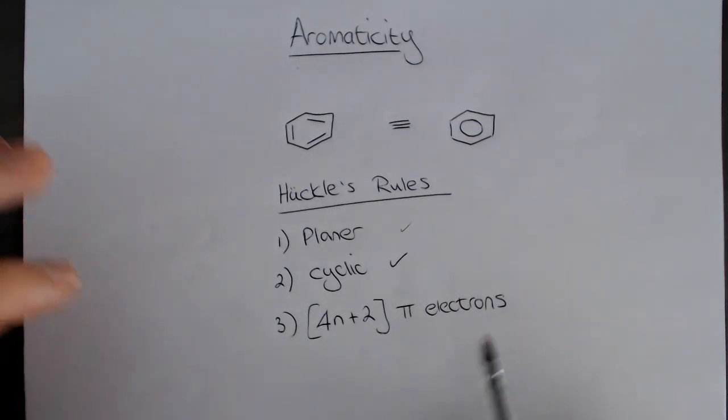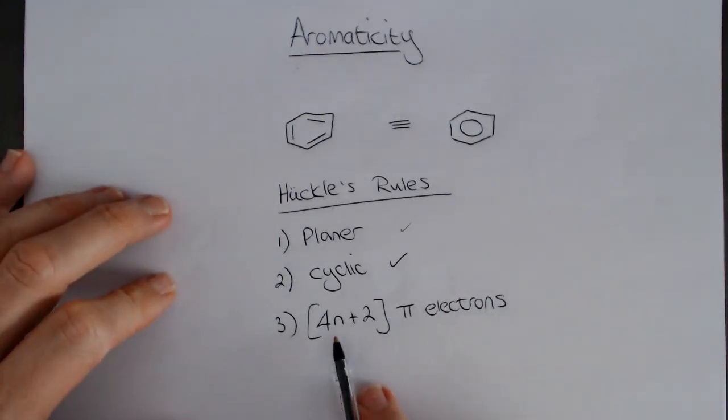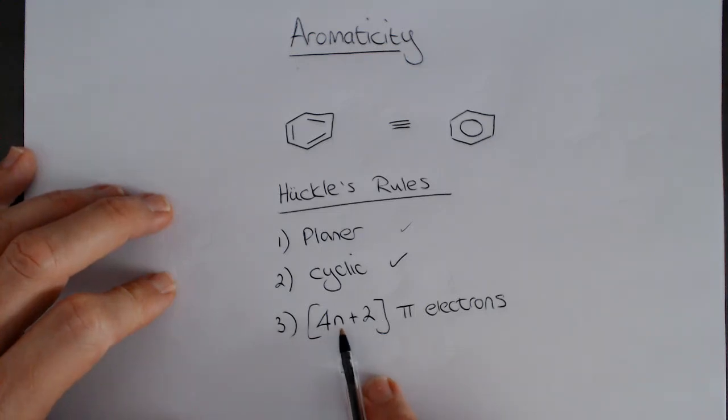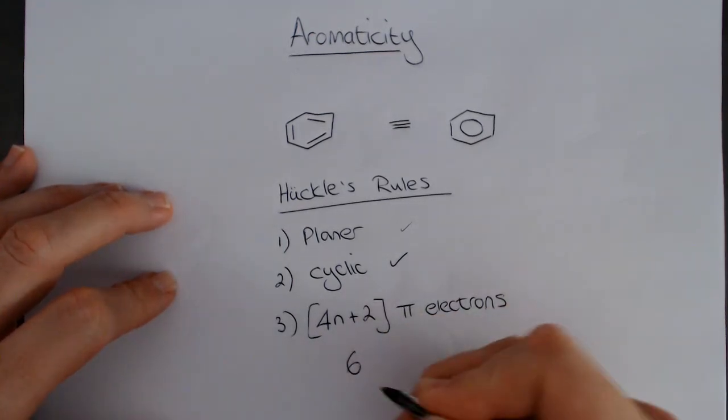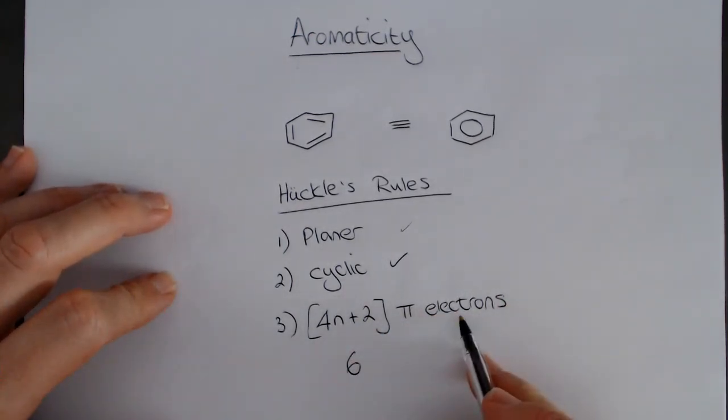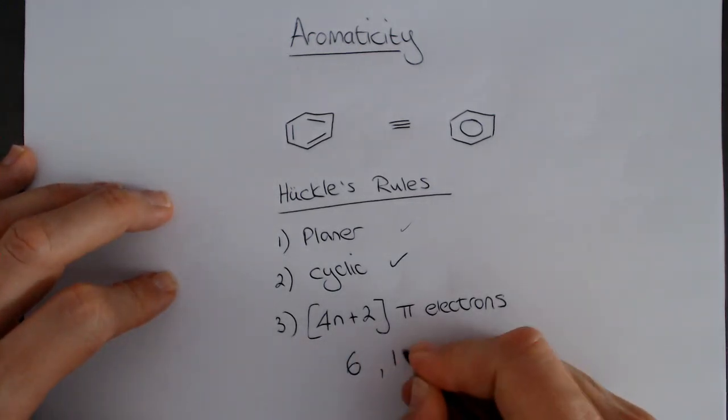In practice, the things that we're going to be looking at are mostly examples where n is either 1 or 2. In other words, if n is 1, we're going to get 4 times 1, that's 4 plus 2. We need 6 pi electrons. So, 6 is one of the numbers that satisfies this formula. If n is 2, the next sequence is going to be 10.